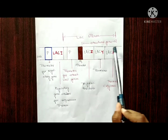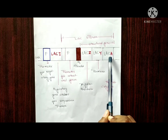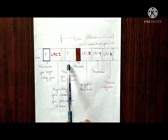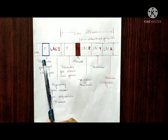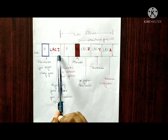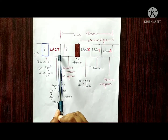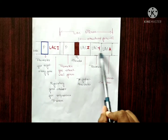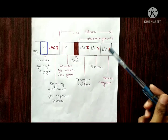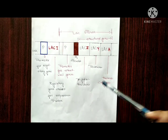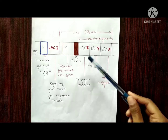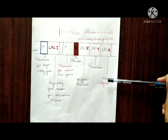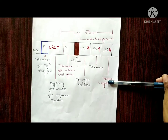The structural genes lacZ, lacY, and lacA share a common operator and promoter. A regulatory gene is also called lacI — I stands for inhibitor — and it also has a promoter. These genes code for three different proteins: lacZ codes for beta-galactosidase, lacY codes for permease, and lacA codes for transacetylase.